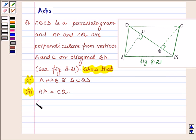So here we are given that ABCD is a parallelogram and AP is perpendicular on BD, also CQ is perpendicular on BD.